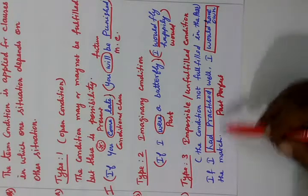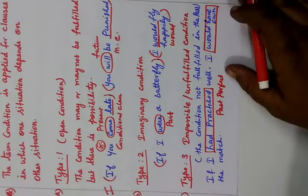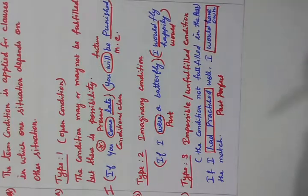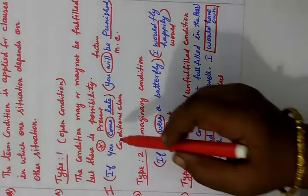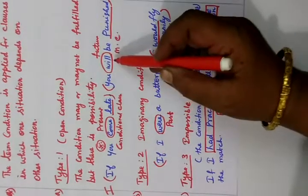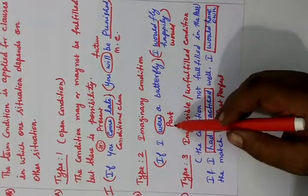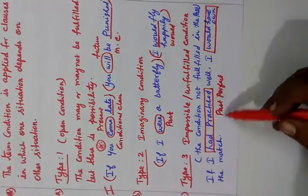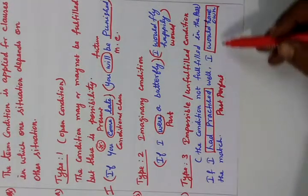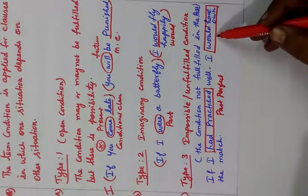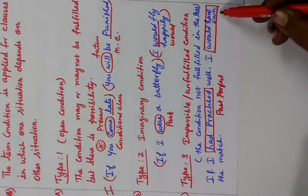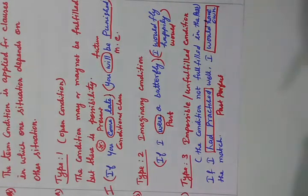Now see the thumb rule exercise. Type 1: present tense → will. Type 2: past tense → would. Type 3: past perfect → would + have + V3 (verb 3). This is the formula.